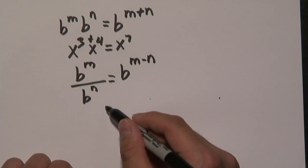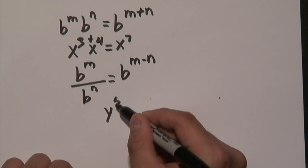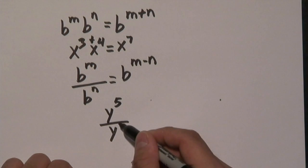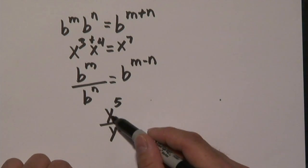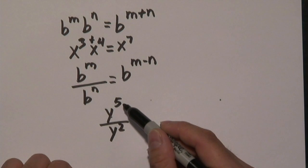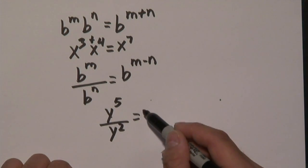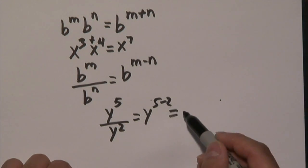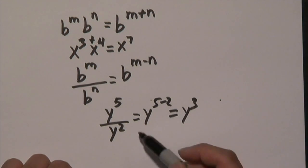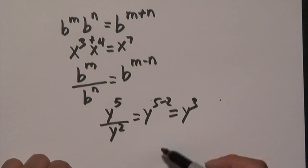For example if you have y to the fifth over y to the second, again making sure the bases match, you have y and y. So what you can do is take the five and subtract the two, y to the five minus two, which as you know is three. So y to the fifth over y squared is y cubed.